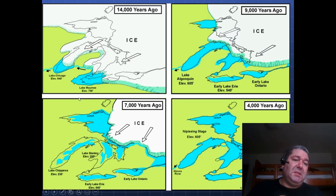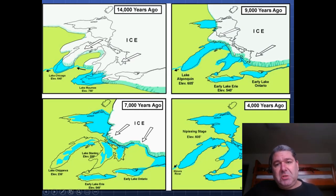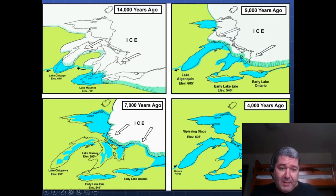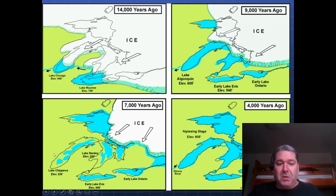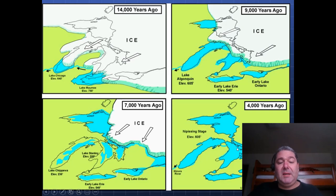Looking at these images again: 14,000 years ago, the very earliest lakes; at 14,500 years ago there were no lakes. At 9,000 years ago, we're in that Lake Algonquin stage — a high stage similar to today but a little higher. Then the northern passage opened, allowing the lakes to drain catastrophically. Here's the modern shoreline, and you can see where the paleo shoreline would have been 7,000 years ago. At 4,000 years ago, we had Lake Nipissing — a high stand even a little higher than today.